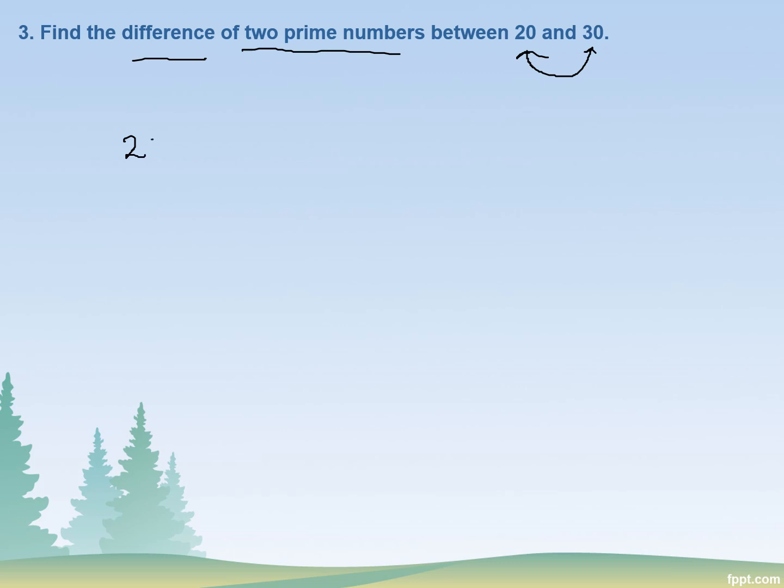Between 20 to 30, there is 21 which is divisible by 3, so it's not a prime number. There is 22, it's divisible by 2. 23 is only divisible by itself and by one, that means one prime number is 23.